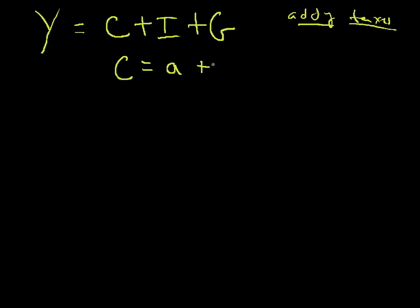They're going to say C is equal to a plus b times income minus the amount of income, which is a fraction t times your income. So what's happening? This is the new element.